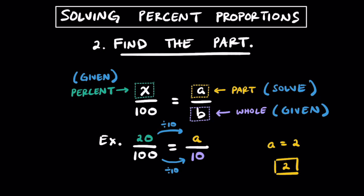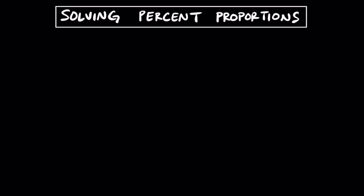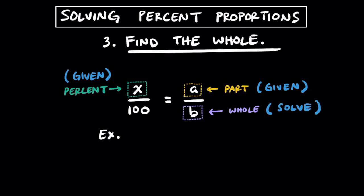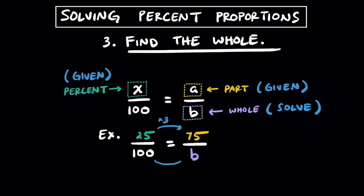The third and final type of problem is when we're looking for the whole. We'll be given the percent (x) and the part (a), and we're going to look for the whole, which is b. If we had the proportion 25 over 100 is equal to 75 over b, then multiplying 25 over 100 by 3 on top and bottom, we find that b equals 300. Given that 75 is the part and it represents 25%, the whole must be 300.